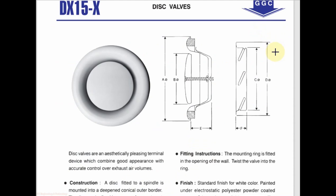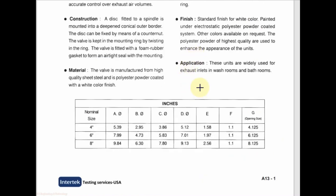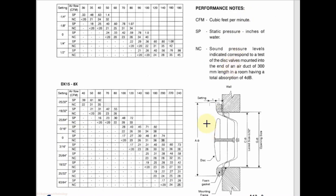Disc valve — where we use it and how to select it. Disc valves are widely used for exhaust inlet in washrooms and bathrooms. The commonly used nominal sizes are 4 inch, 6 inch, and 8 inch.